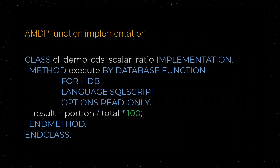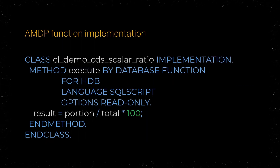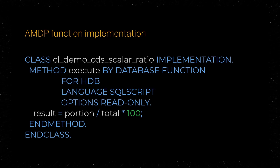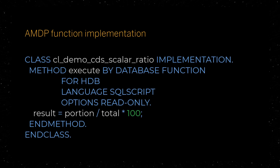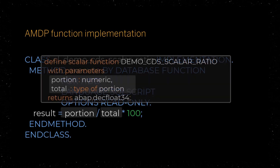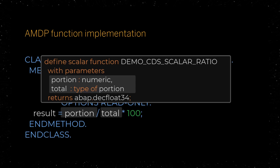The AMDP function implementation is an AMDP method that implements the CDS Scalar function in SQL script as a database function and returns a scalar value. It derives its parameters from the scalar function definition.